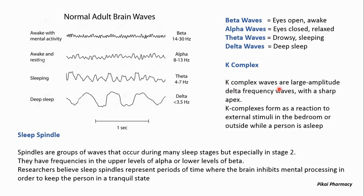K-complex waves are large amplitude delta frequency waves with a sharp apex. These K-complexes are produced when the sleeping person comes in contact with or experiences some sort of external stimuli or disturbance while sleeping.